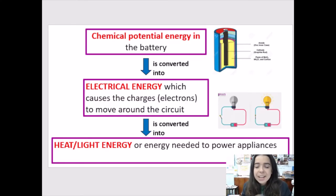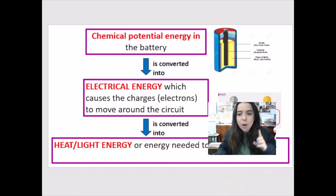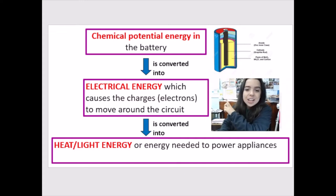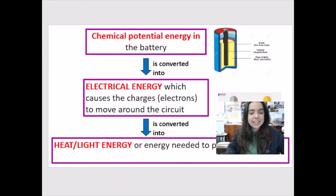Remember, energy cannot be created or destroyed. It can only be transformed from one form to another. So that's why we transform the energy from the battery to electrical energy and then to heat light energy.